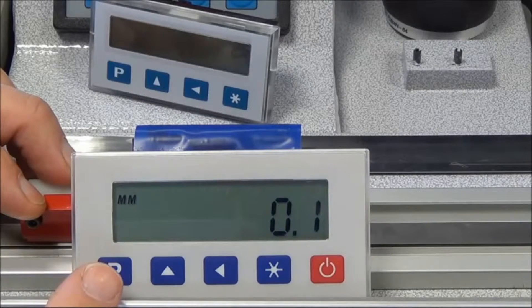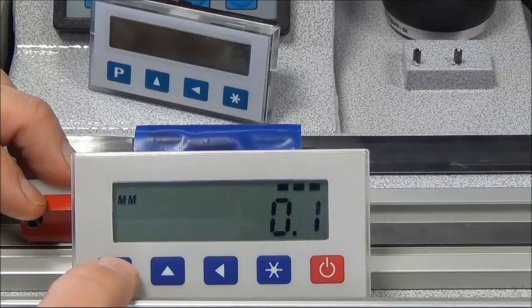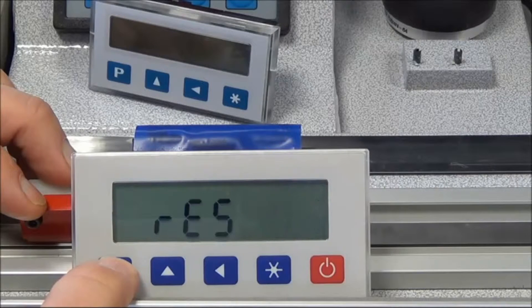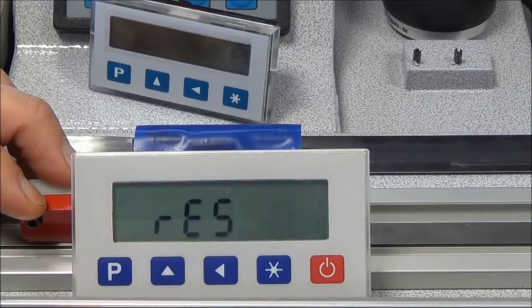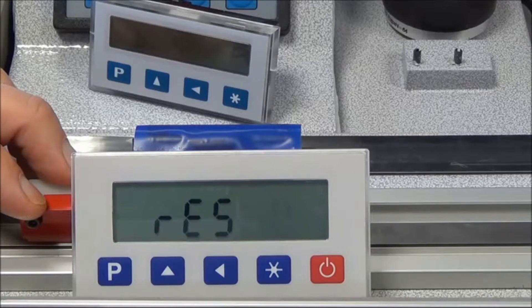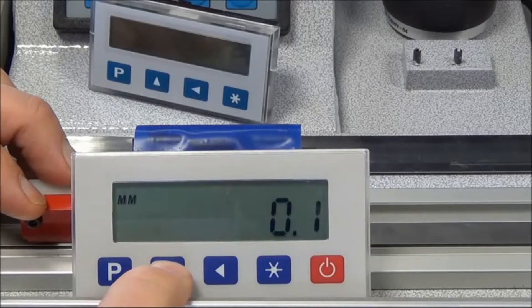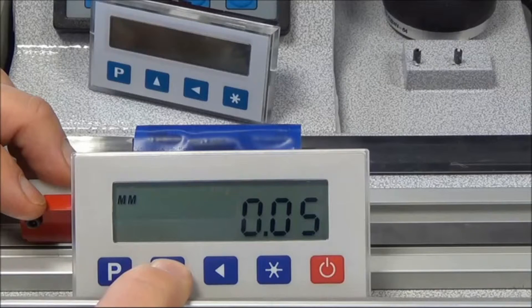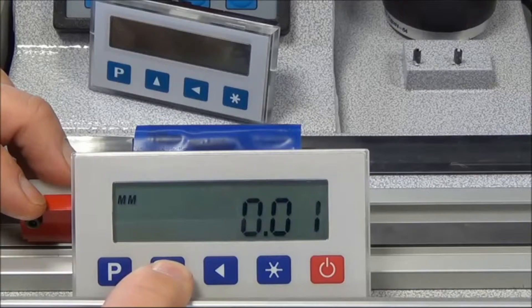To change this to hundredths of a millimeter, we go into the programming mode by pressing the P button. The first parameter is the resolution, so we can step through via the arrow up button. You can see 0.05 millimeters and then 0.01 - this is the value that we want.